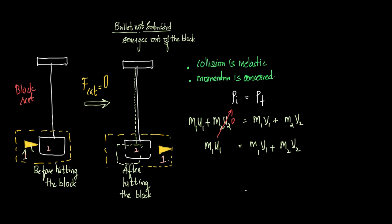Now we discuss case 2.2: the swinging of the block without the bullet.